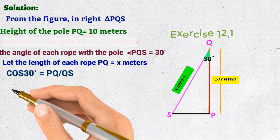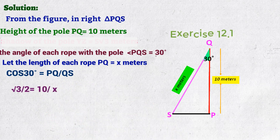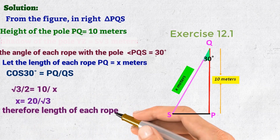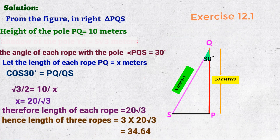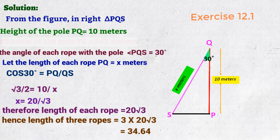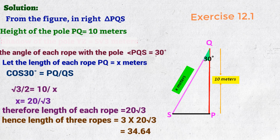Substituting the values, we get √3/2 equals 10 divided by X. Simplifying this equation, we get X equals 20/√3 meters. Therefore the length of each rope is 20√3 meters. Hence the total length of the three ropes equals 3 × 20√3 meters, which simplifies to 60√3 meters. Substituting √3 = 1.732 and multiplying, the total length of all three ropes equals 34.64 meters.